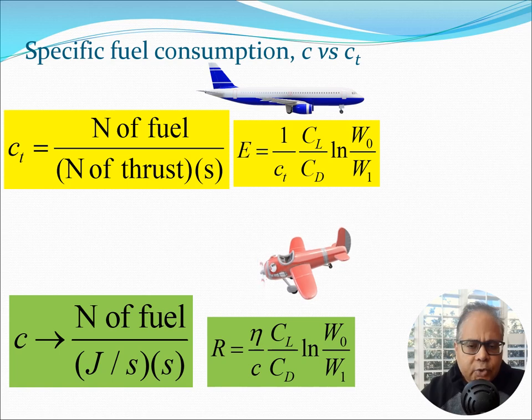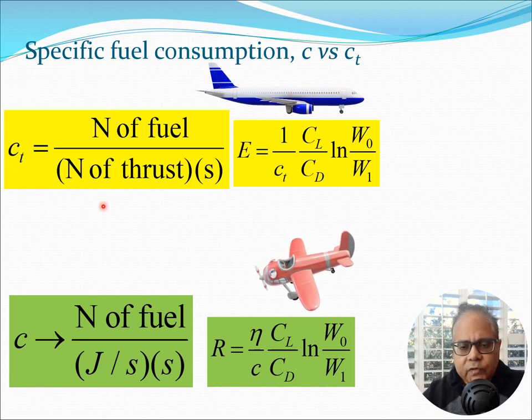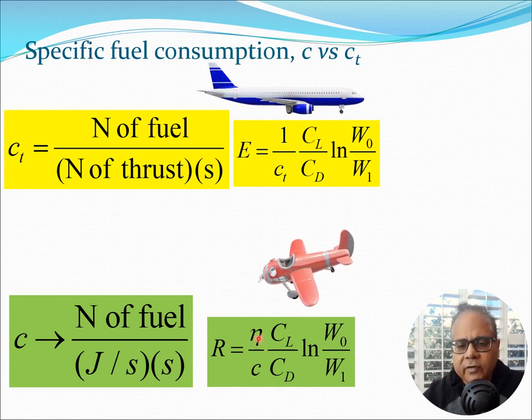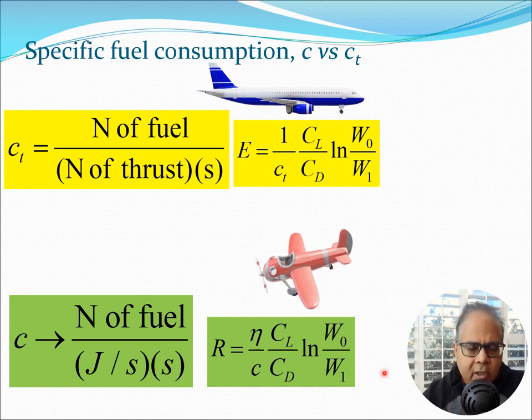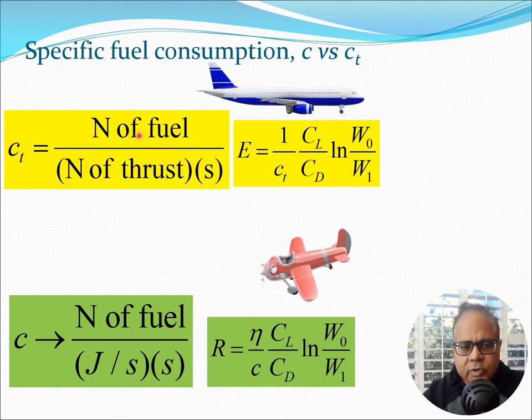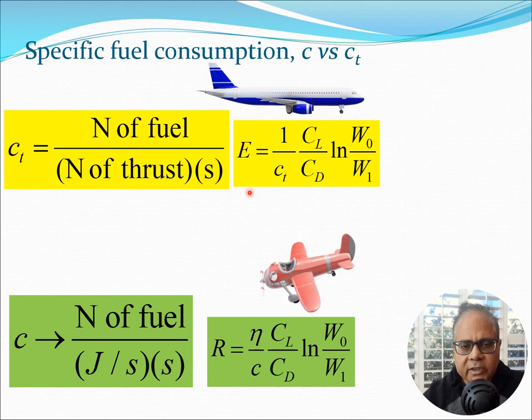So just to recapitulate, today we looked at the specific fuel consumption CT and this was defined in terms of thrust. This is what is used for the jet engines. Previously we used the C for the propeller engines and that was defined in terms of power which was joule per second. So in that case we were able to get the expression for range for a propeller aircraft, and now we get the expression for endurance for a jet aircraft like this. Now these two equations look somewhat similar but there are some differences. The efficiency of the propeller is coming in here. Now if you look at the units you will see that CL, CD, all these are dimensionless, W0 by W1, so the unit of this is governed completely by CT. The unit of CT is actually Newton by Newton and second, so 1 by CT means the endurance is coming out in seconds.